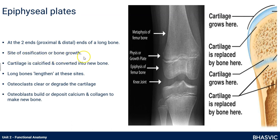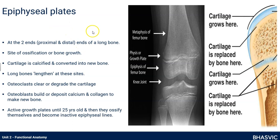The epiphyseal plates are where bone growth happens, where ossification happens. It's basically cartilage that gets calcified, hardened, and converted into new bone — this is called ossification. This is where, when you're growing, your long bones lengthen and you get taller. Osteoclasts clear out the old cartilage, and osteoblasts deposit new bone cells — they deposit calcium and collagen to make new bone. These epiphyseal plates are active until about your mid-twenties, when they become hardened and become epiphyseal lines. That's when you stop growing.